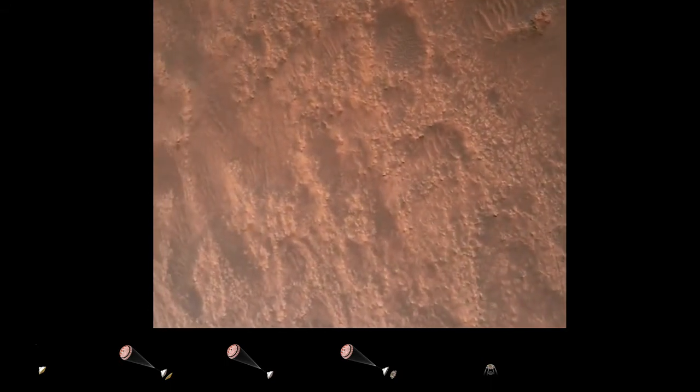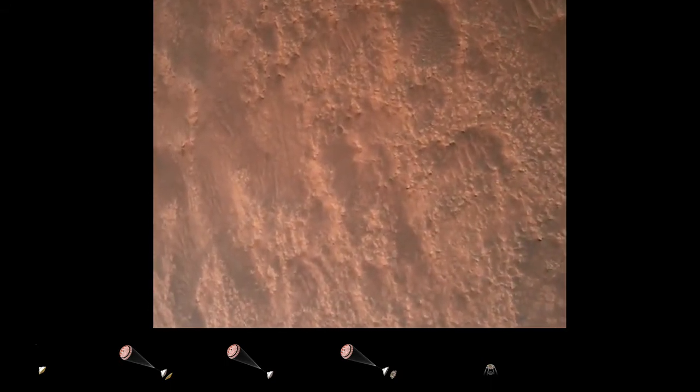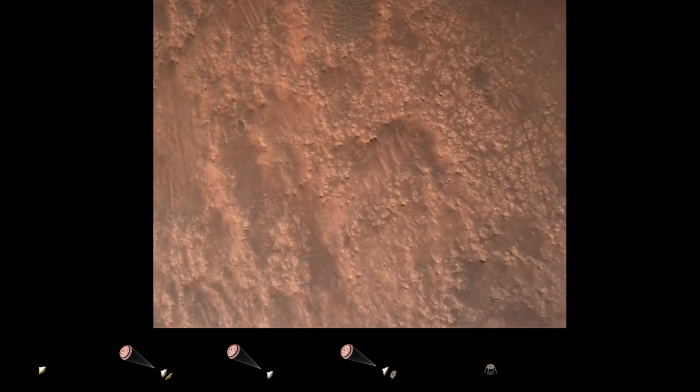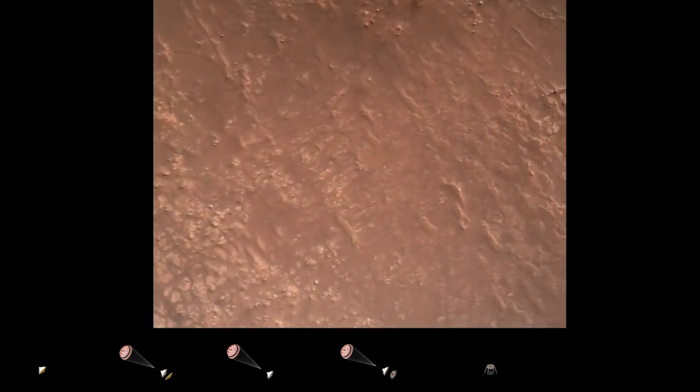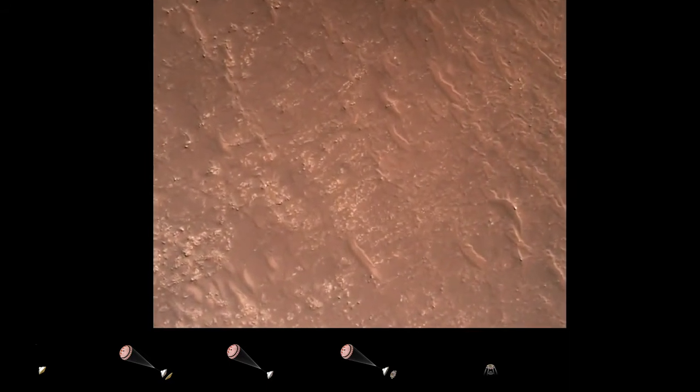TRN safety, bravo. We have completed our terrain relative navigation. Current speed is about 30 meters per second at an altitude of about 300 meters off the surface of Mars.